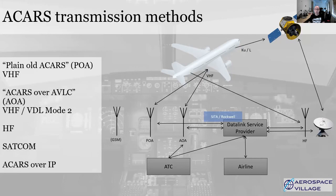There are several classes of node in the ACARS network — the aircraft themselves and ground stations like the airlines and air traffic control. In order to route a message from an aircraft flying over, let's say Spain, back to the airline HQ in the UK, a data link service provider is paid to pick up, route and deliver these messages. You have two data link service providers — DSPs — to choose from: SITA and Rockwell. Rockwell bought ARINC Inc., including the ACARS network, back in 2013, so you might see ARINC/Rockwell used interchangeably.